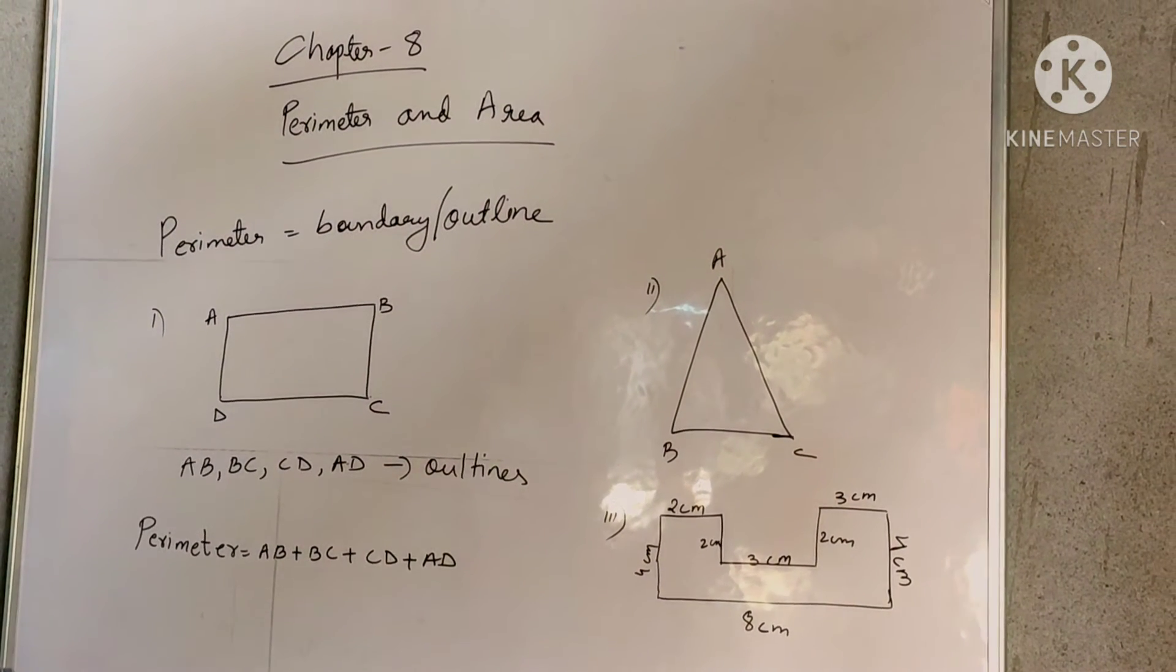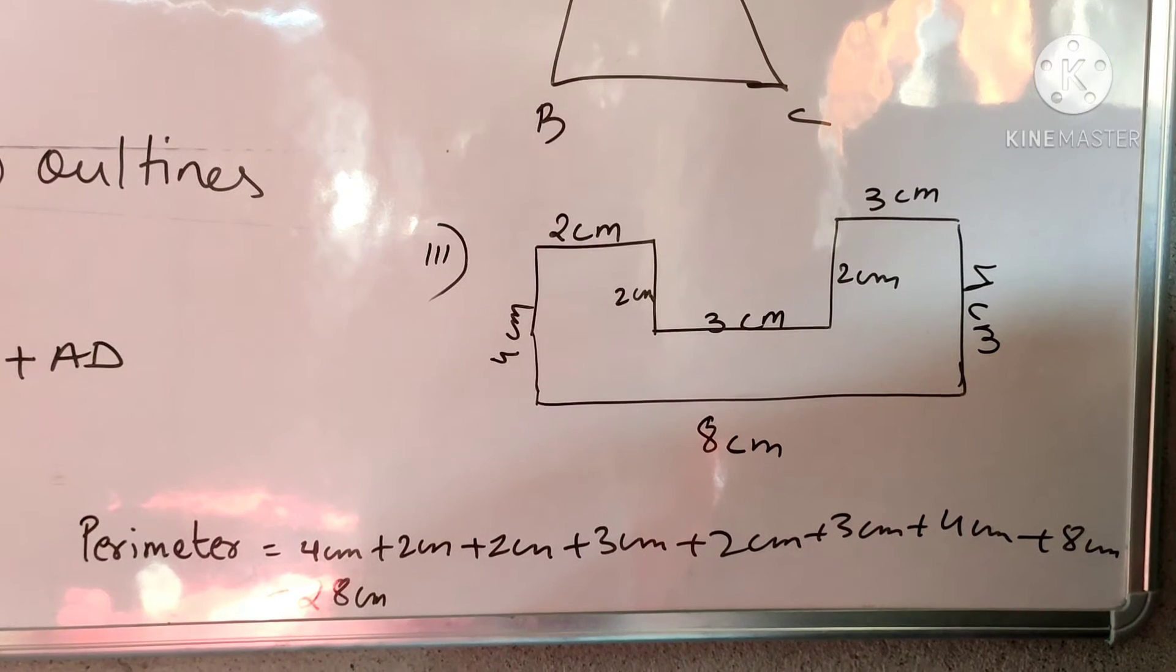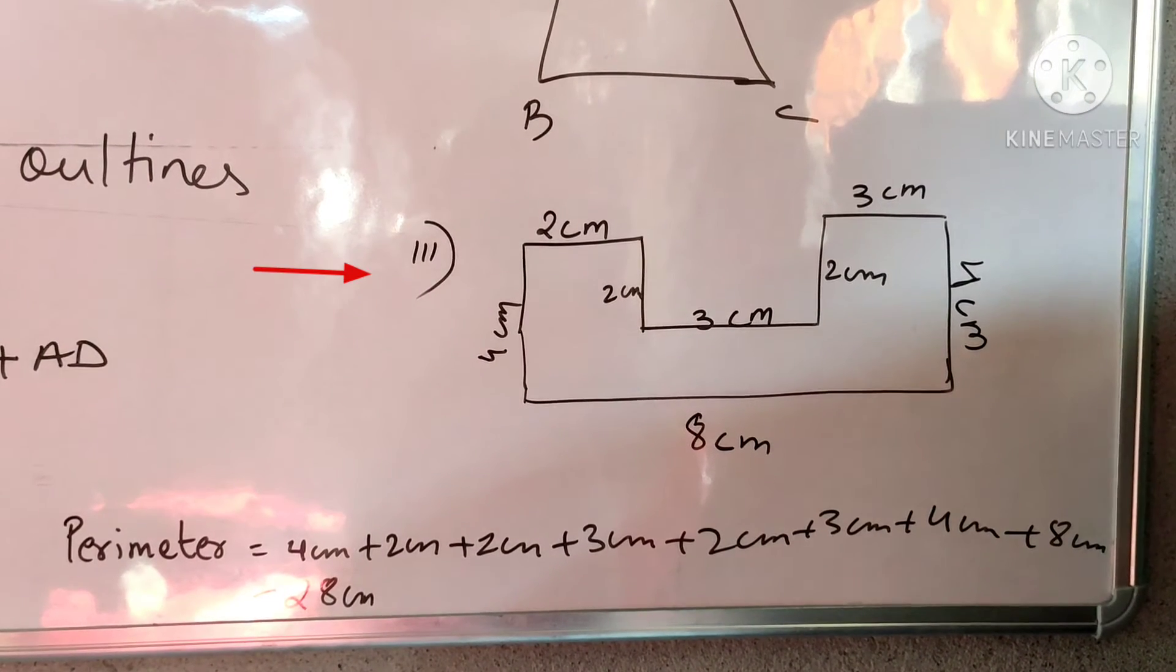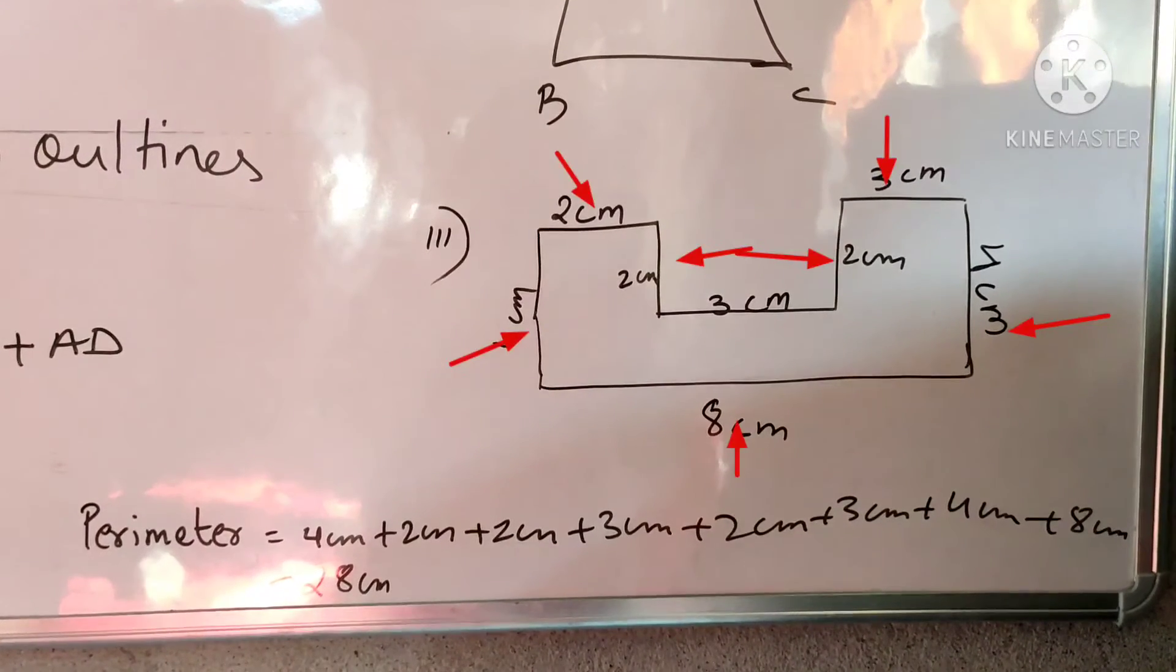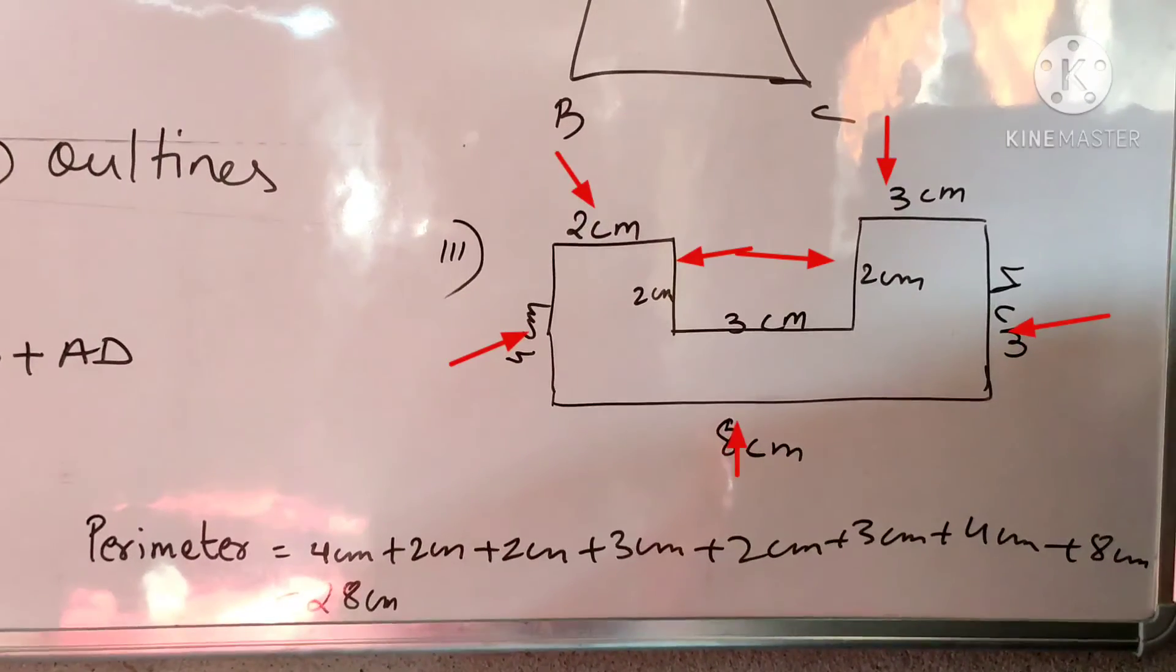So if measurements are given, then you need to add the given measurements. You can see in figure number 3, the measurements are given. So if you see all the measurements which are given on the outline, then we need to add everything to find out the perimeter of this particular given figure.